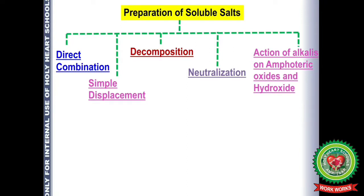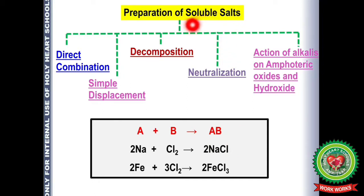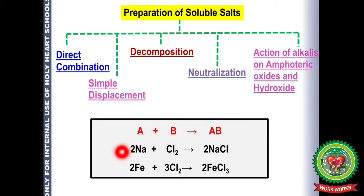The first method is direct combination — when two or more reactants react to form a single product. If sodium reacts with chlorine we get NaCl. Soluble salts are those which dissolve in water, such as sodium chloride and FeCl₃. These can be prepared by direct reaction of a metal with a non-metal: sodium + chlorine → sodium chloride; iron + chlorine → FeCl₃, that is ferric chloride.